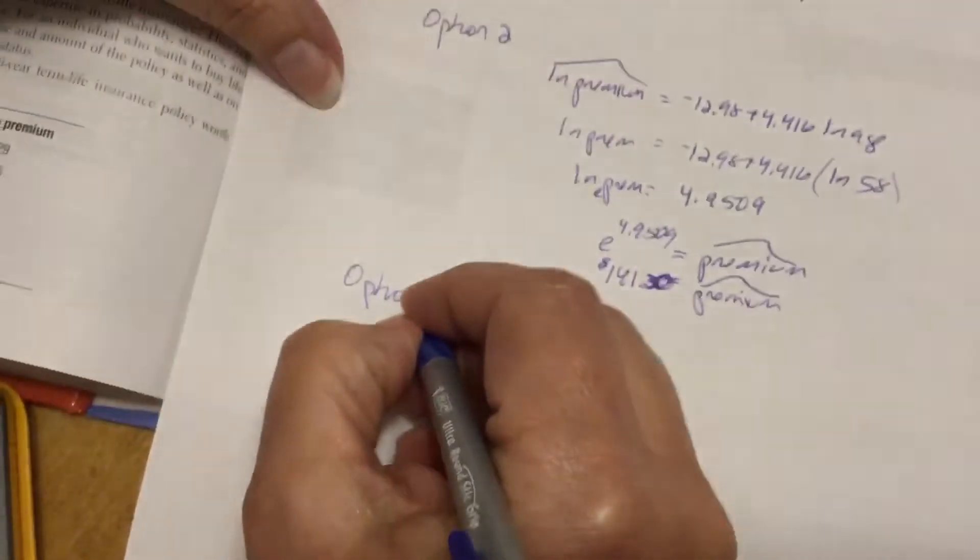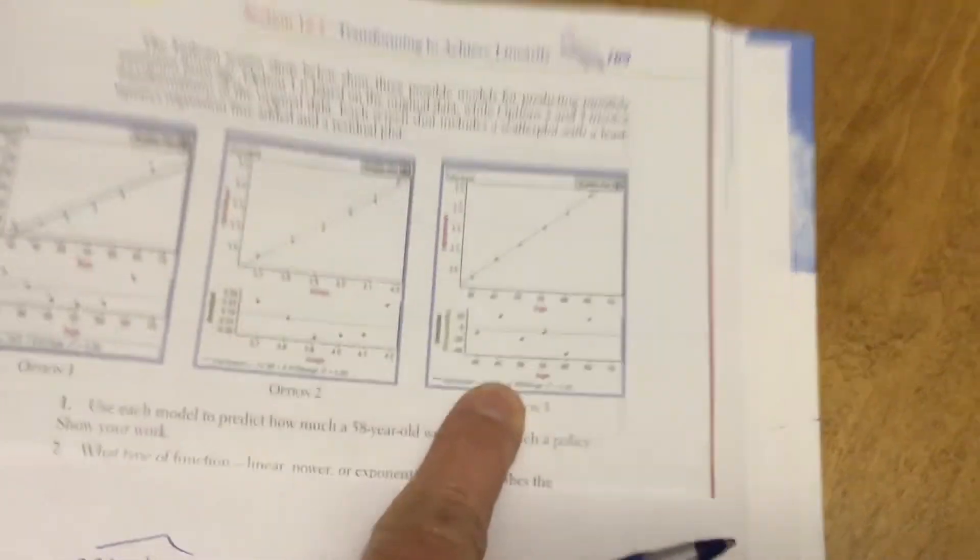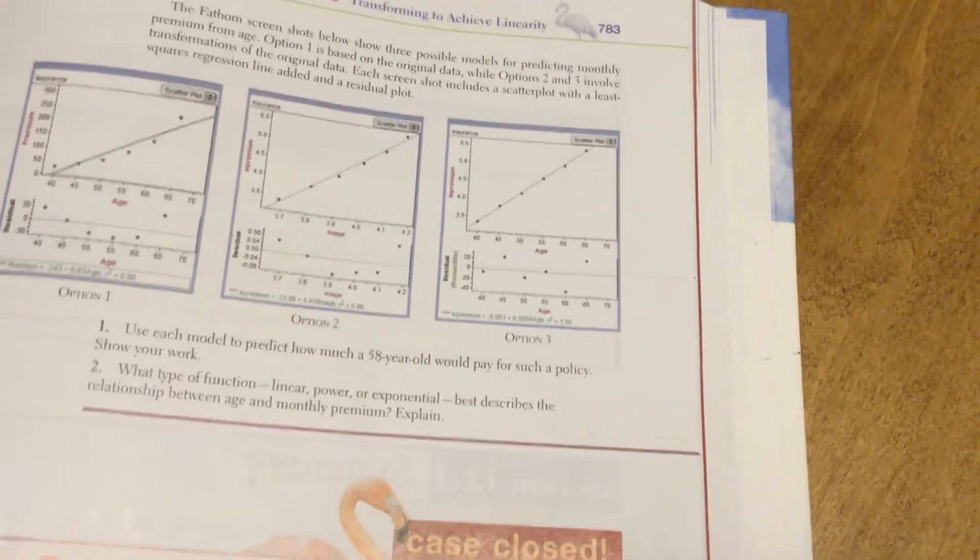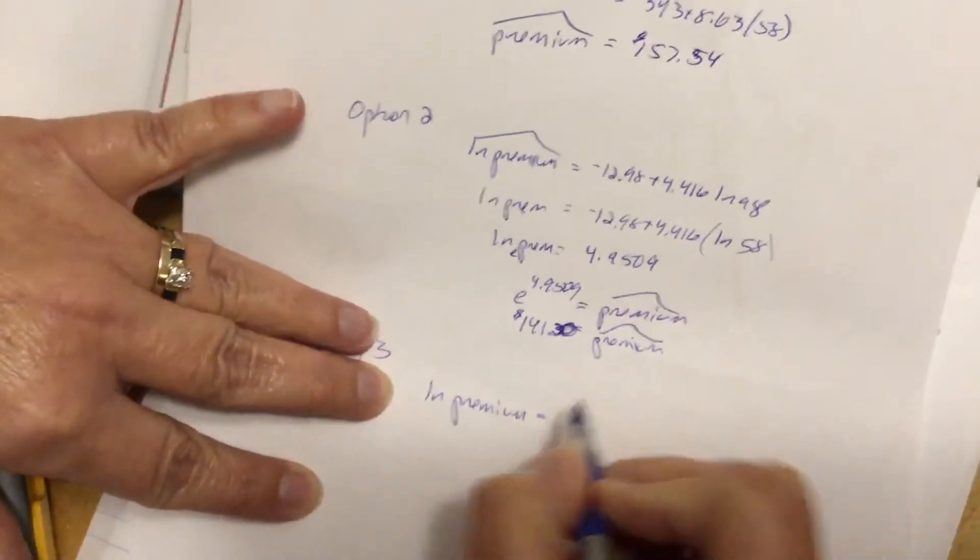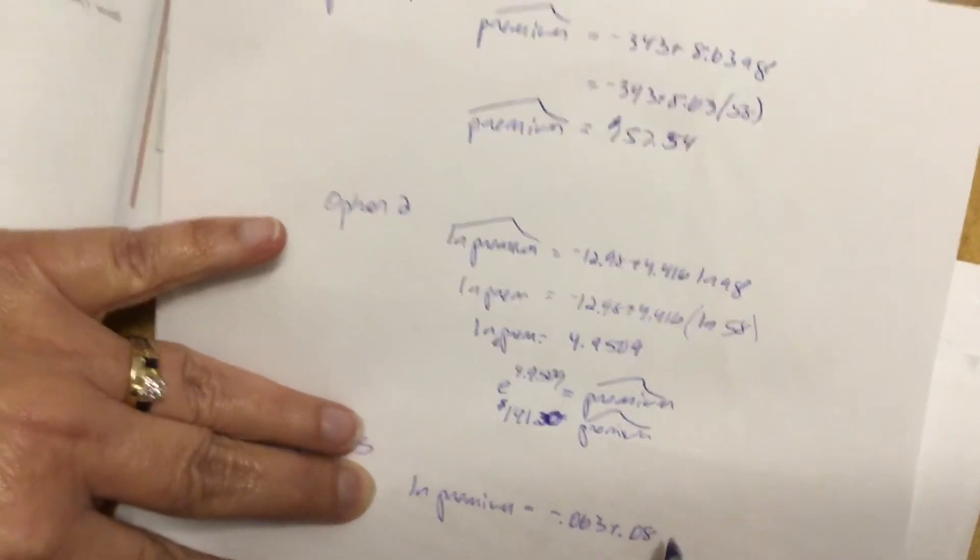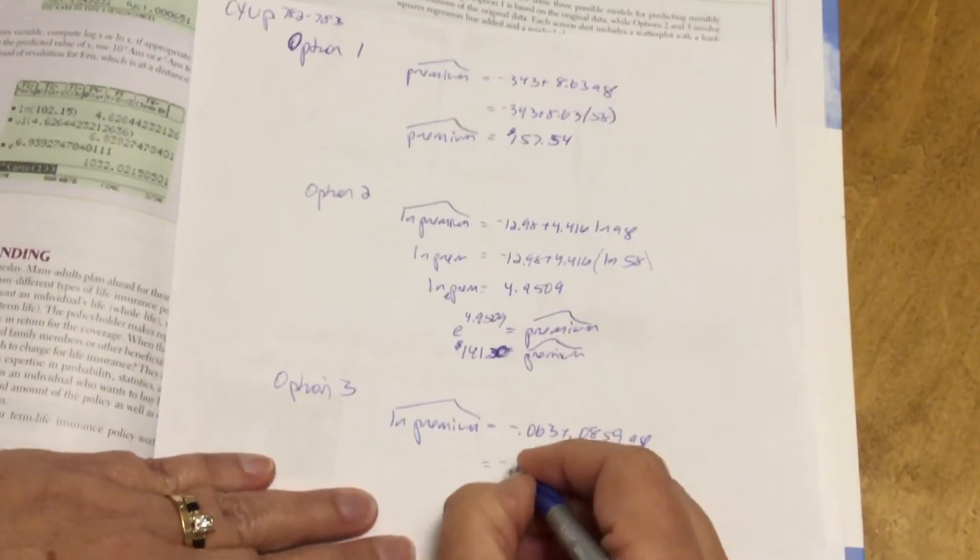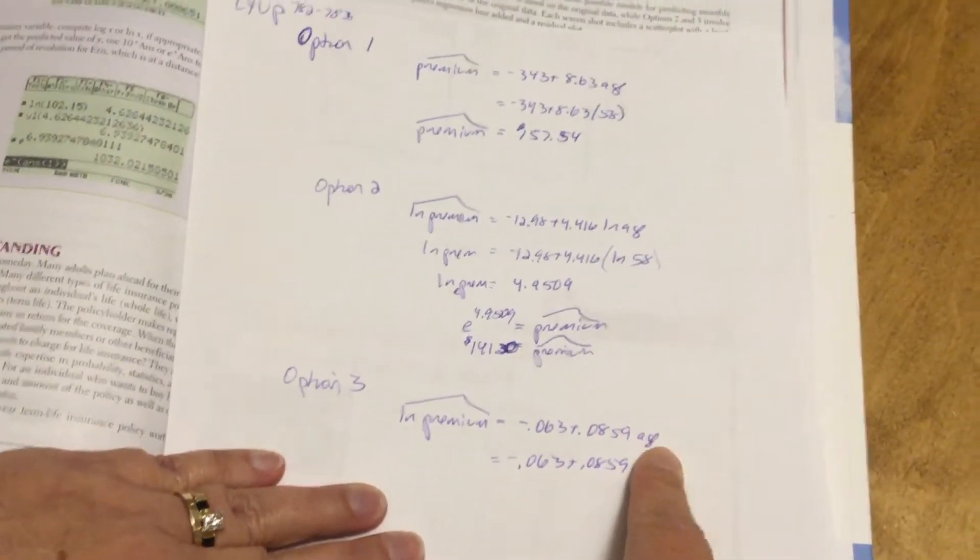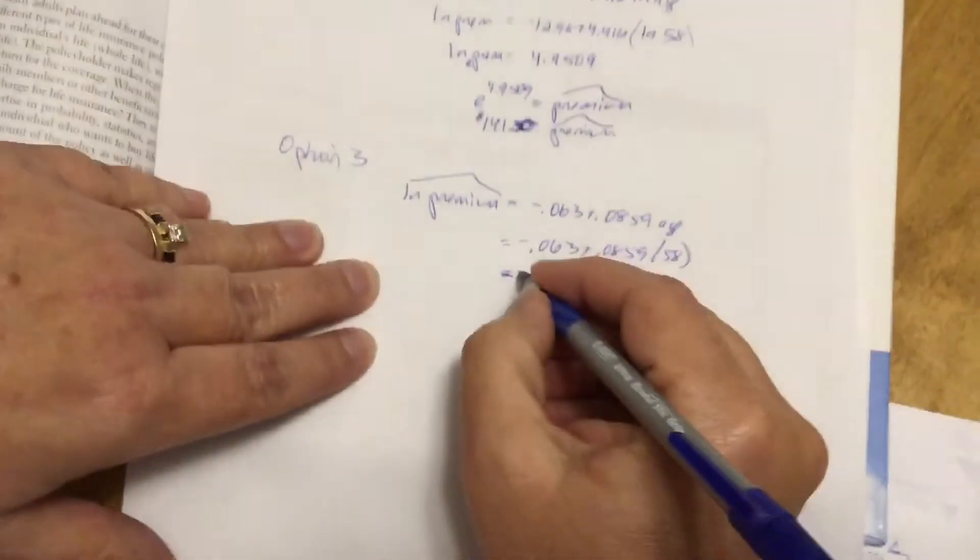Option three has, come up here, has the straight age, our plain old X age, and then the premium, excuse me, the natural log of the premiums. Let me rewrite that regression equation. So natural log of premium equals negative 0.063 plus 0.0859 times the age. So again, to do the math, I'm simply going to plug in, I don't have to natural log the age. This is just the straight age. Let me put that in the calculator, and I get 4.9192.